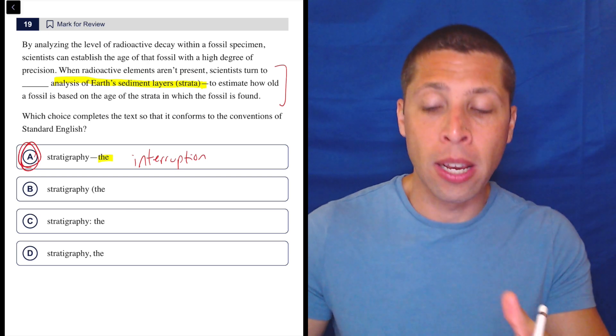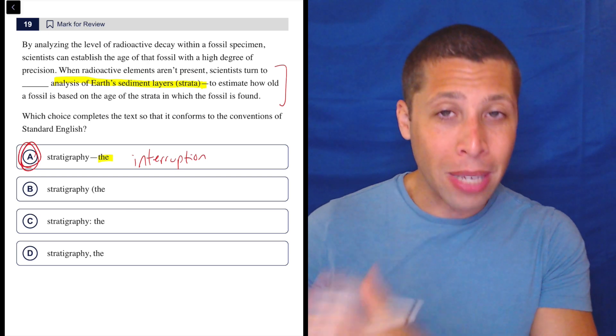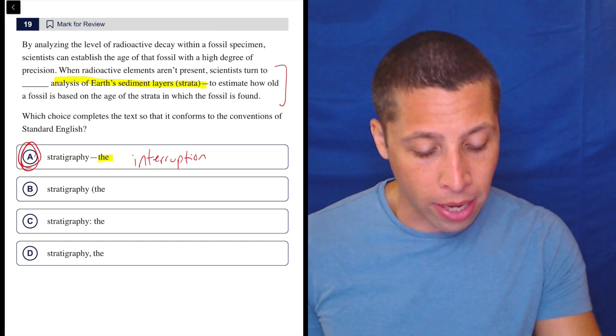So what we've done is we've inserted this interruption. The first dash tells us where the interruption begins. The second dash tells us where it ends.